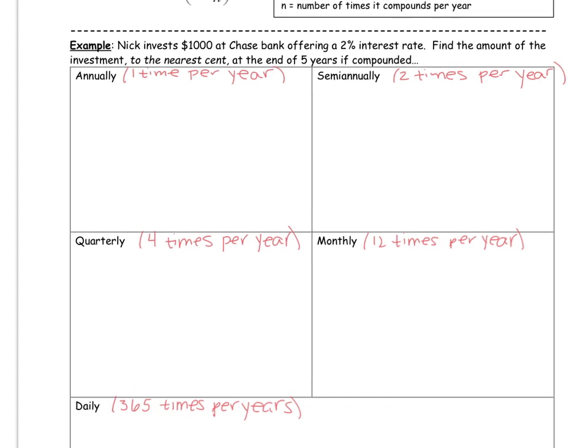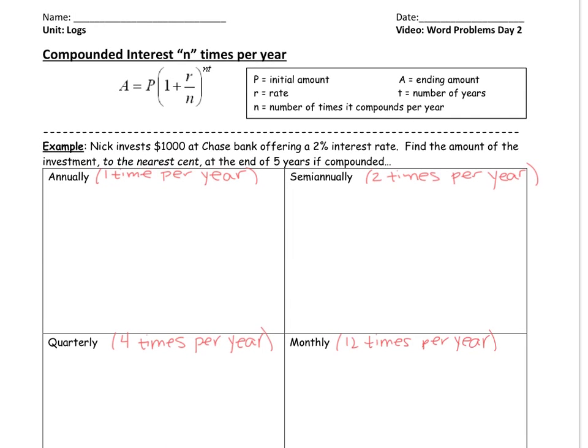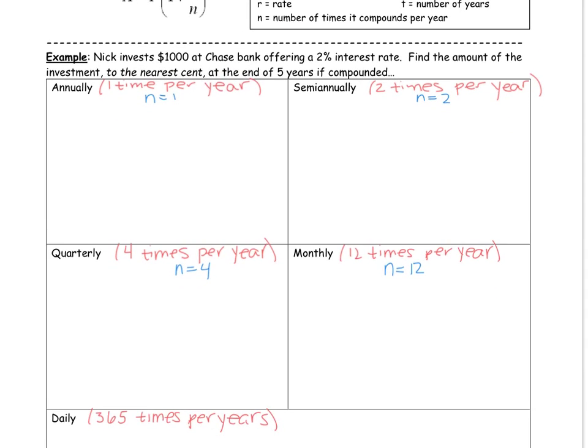So what is this part of the formula? When it says I'm compounding something one time per year, that is the n. n is the number of times I'm compounding something or calculating the interest. So here, n would equal 1. Here, n would equal 2. n would equal 12. n would equal 4. And then here, n would equal 365.